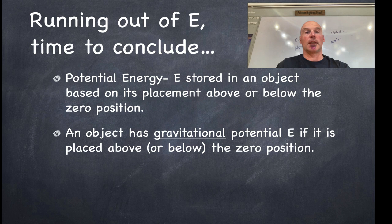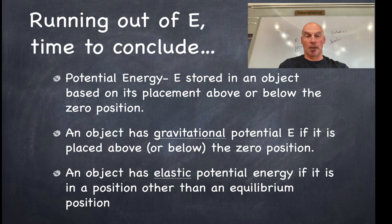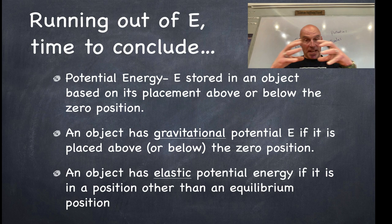So an object has gravitational potential energy if it is placed above or below the zero position. An object has elastic potential energy if it is in a position other than an equilibrium position. In other words, if it is not equal, if it's being compressed or stretched, that is when it has the elastic potential energy.